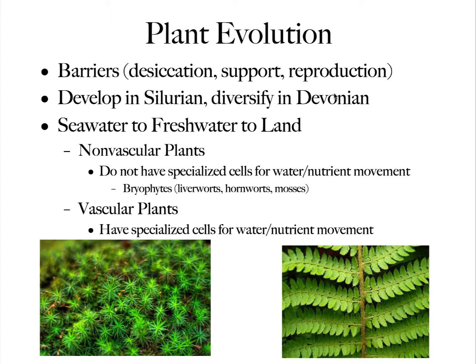The other group of plants are the Vascular plants, and these are the ones that have specialized cells for movement of water and nutrients throughout the body of the plant. For vascular plants, there's Seedless Vascular and Seed Vascular. Here are some Bryophytes — some Liverworts — and then here is a Fern, which would be a Seedless Vascular plant.